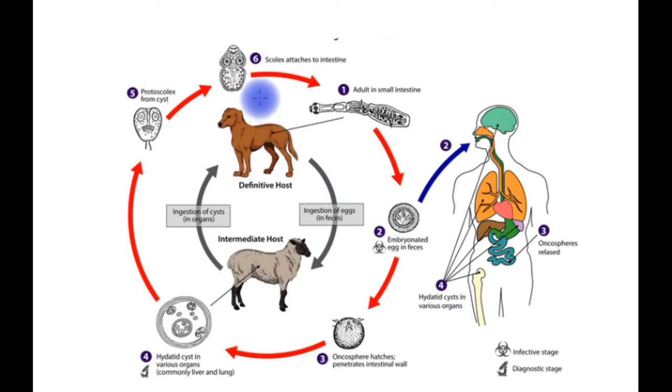The life cycle of the tapeworm involves a definitive host which is a carnivore, commonly dogs. The dog tapeworm resides in the intestine where it produces eggs, and these eggs are taken up by the intermediate host, commonly the sheep. Humans are accidental intermediate hosts where the eggs may be ingested because of proximity to dogs in these communities.